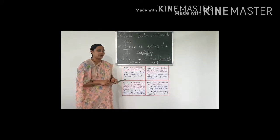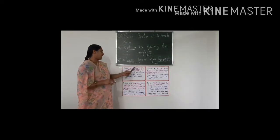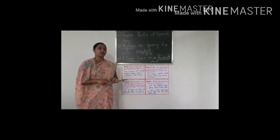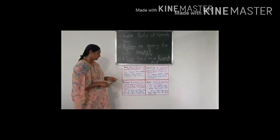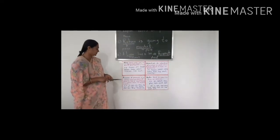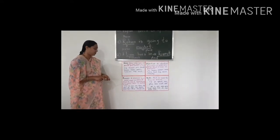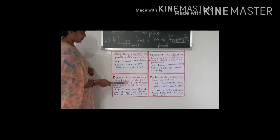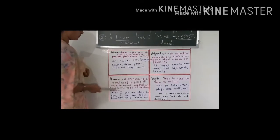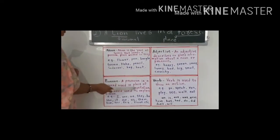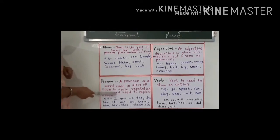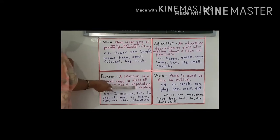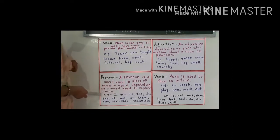In this way, noun is the part of speech that names a person, place, animal, or thing. The next part of speech is pronoun. A pronoun is a word used in place of a noun to avoid repetition, or it is a word used to replace a noun.